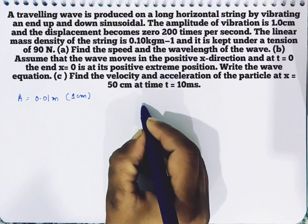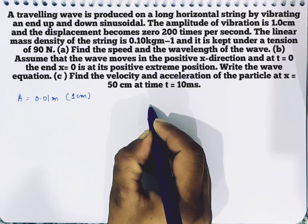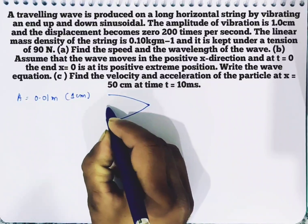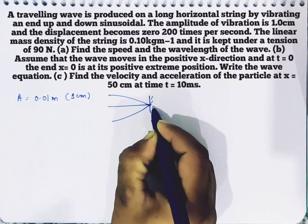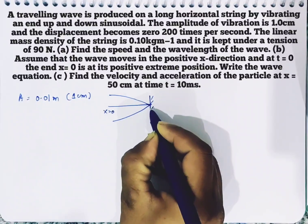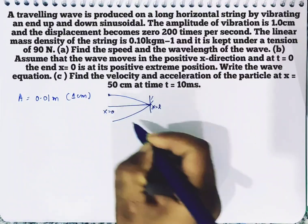Displacement becomes zero 200 times per second. So if you see this question, they have said the displacement starts from extreme. And this is a string, here is x equal to 0, here is x equal to length. We will start here.